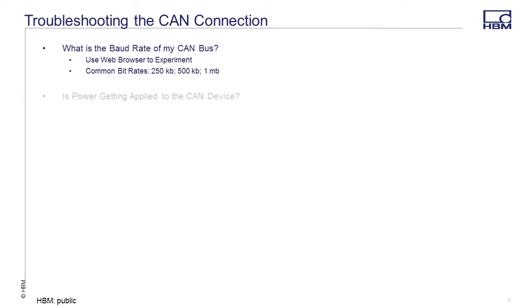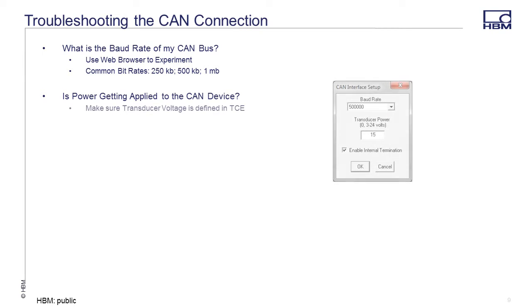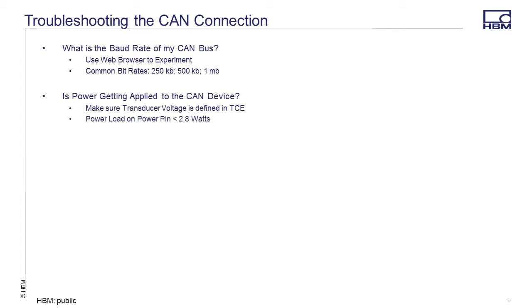If you are working with a CAN device that requires power from the EDAC CAN port, is the device getting powered? If not, in TCE, check the transducer voltage that is defined in the CAN interface setup dialog. The ECOM CAN ports can provide up to 2.8 watts of transducer power. A CAN device that requires more than 2.8 watts of power will sink the transducer voltage and could damage the CAN port.